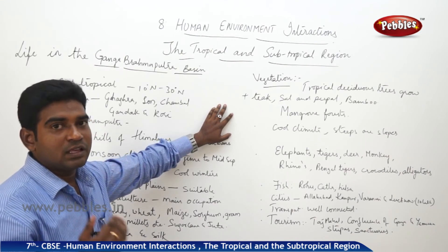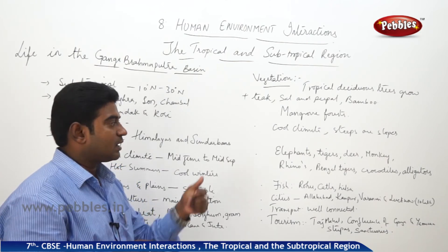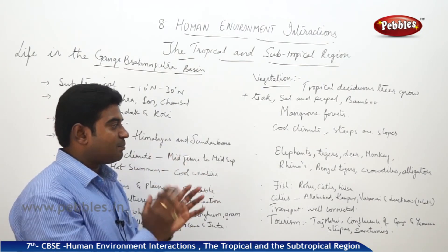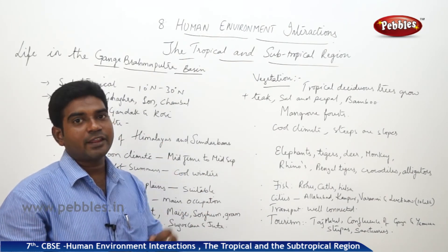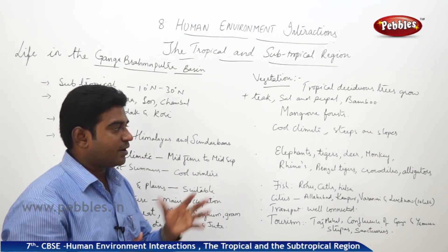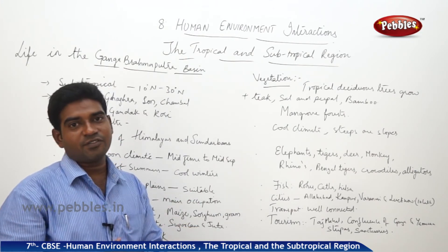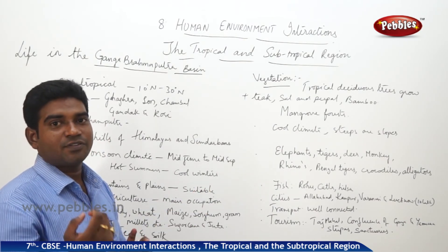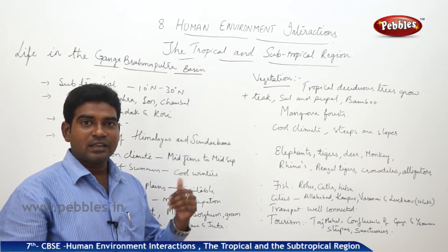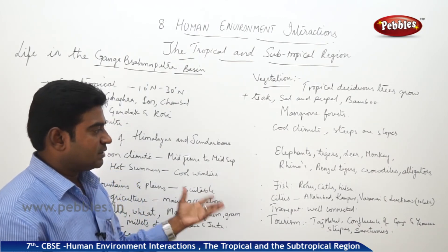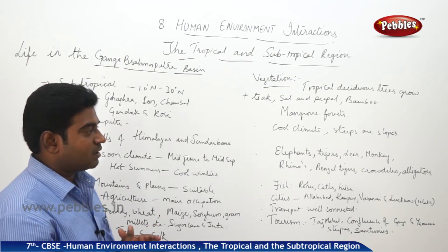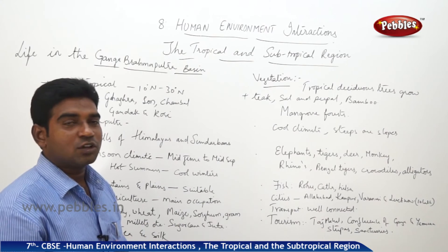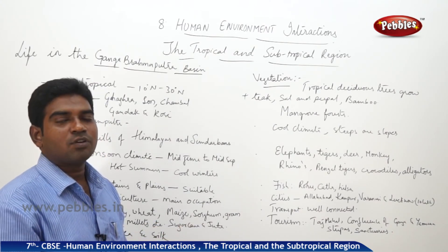The animals found here are elephants, tigers, deer, and monkeys. Specifically, in the northeast we find the one-horned rhino, in the Bengal region the Bengal tiger, and in other parts crocodiles and alligators. Different types of fish include rohu, katla, and hilsa. The staple food is rice and fish, or wheat. Many cities have grown on the banks of the Ganga and Brahmaputra, each with more than 10 lakh population — including Allahabad, Kanpur, Varanasi, and Lucknow.